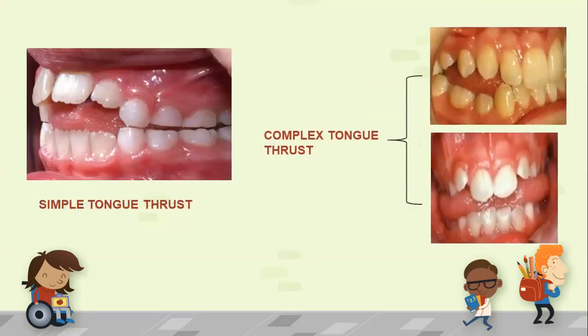Tongue thrusting can also be classified into simple and complex tongue thrusting. Simple tongue thrusting involves only thrusting of the tongue between upper and lower anterior teeth with no problem in the posterior region, predominantly leading to anterior open bite. Complex tongue thrusting is also known as lateral tongue thrusting; here we can see posterior crossbite as well, and this type of tongue thrusting may lead to heavier malocclusion.